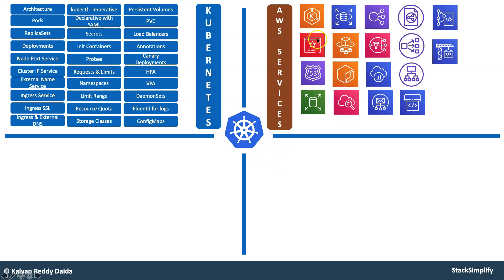For example, we will have Fargate, Certificate Manager, Route 53, Elastic Block Store, RDS database, and then Elastic Load Balancing with Classic Load Balancer, Network Load Balancer, and Application Load Balancer with Ingress Service. Whatever integration possibilities exist with EKS, we have tried to get them under this course.